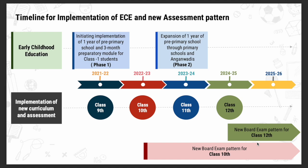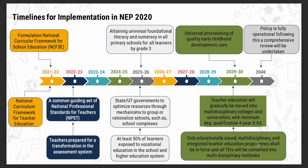Coming to goals and timelines — NEP has not just suggested things but has also set timelines for achieving them. Key targets include: attaining universal foundational literacy and numeracy in all primary schools for all learners by 2025-26; universalization of quality early childhood development and care by 2030; and 2030 to 2040 being the implementation years, with the next policy review at 2040. These timelines will help us plan in a better way.